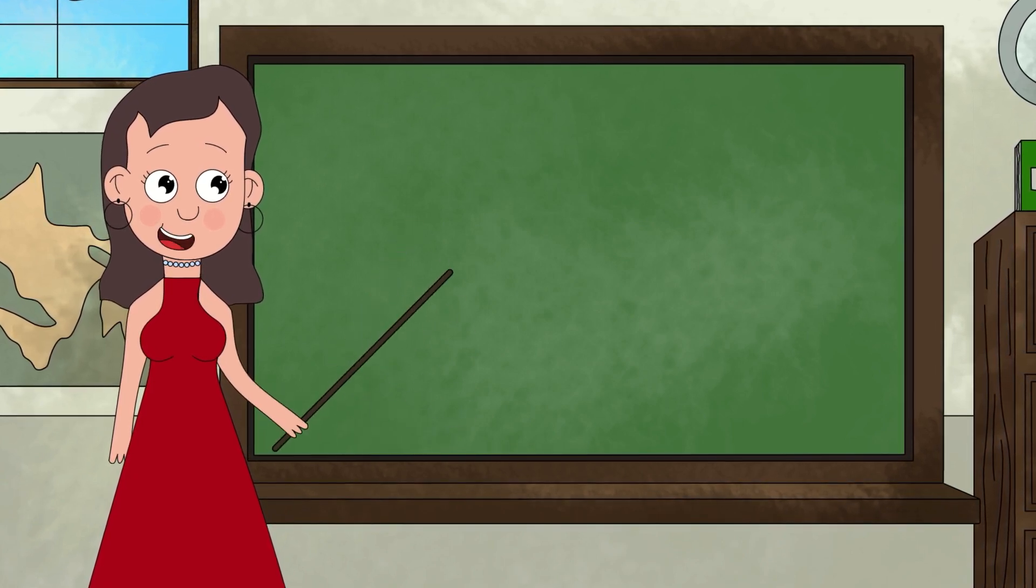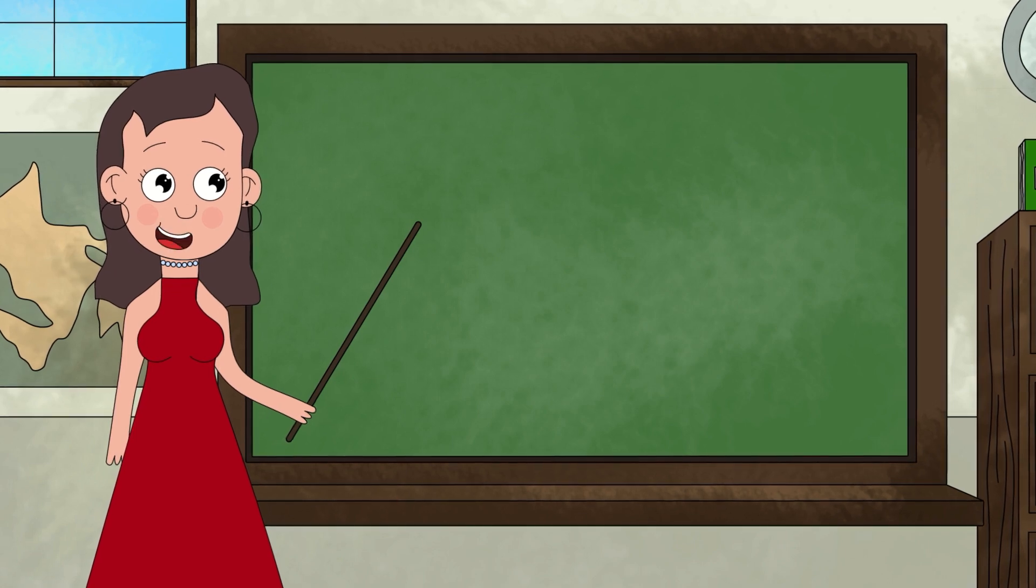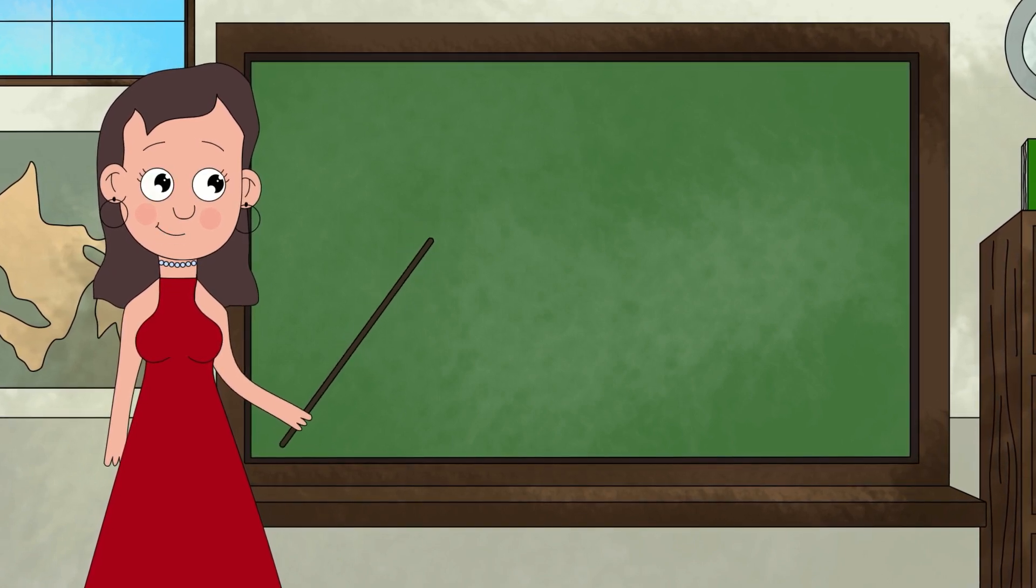Step three is storyboards. You draw the story in a rough way so you can see how it will look.